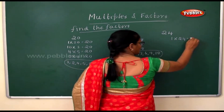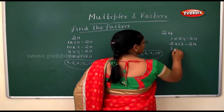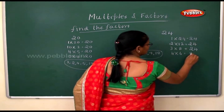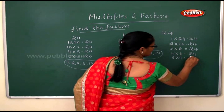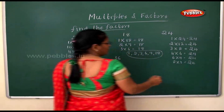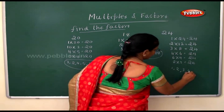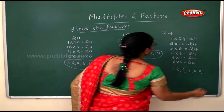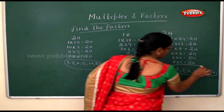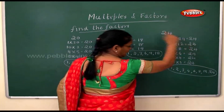For twenty-four: one twenty-four is twenty-four, two twelves are twenty-four, three eights are twenty-four, four sixes are twenty-four, six fours are twenty-four, eight threes are twenty-four. So the factors for twenty-four are one, two, three, four, six, eight, twelve, and twenty-four.